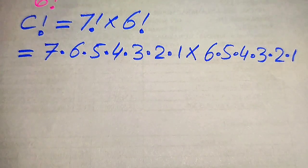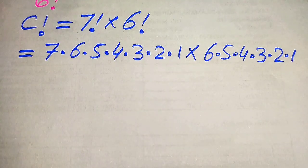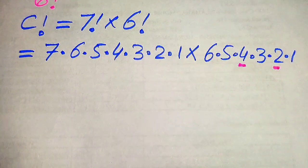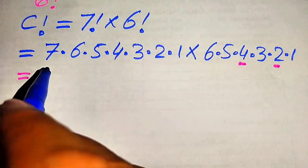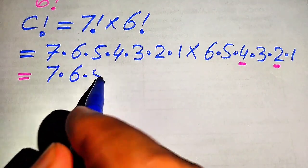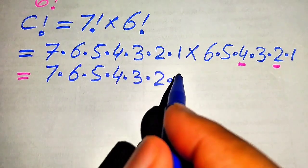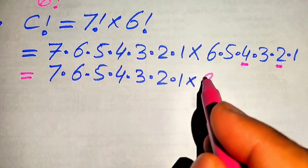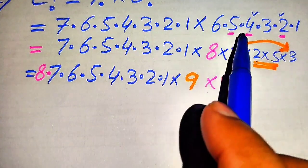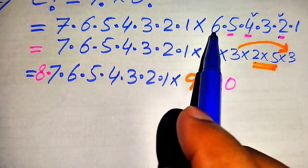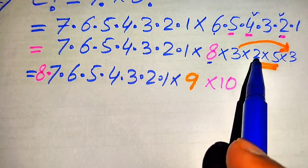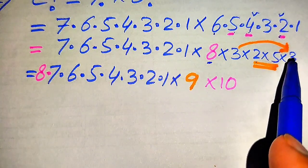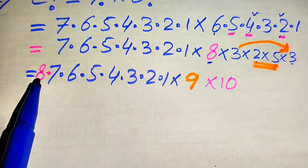Now we need to rearrange the terms. When we multiply 4 × 2 we get 8, and we break 6 as 3 × 2. The remaining values are 5 and 3. We write these two values and then move 8 to the front of the expression.